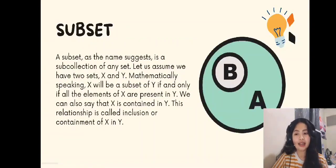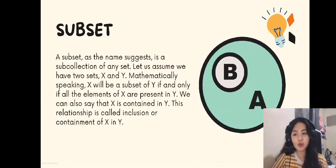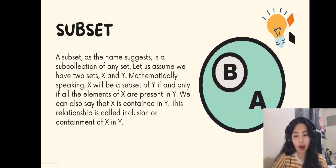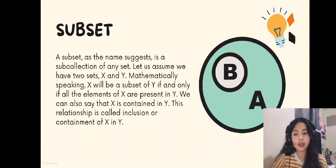A subset, as the name suggests, is a sub-collection of any set. Let us assume we have two sets, X and Y. Mathematically speaking, X will be a subset of Y if and only if all the elements of X are present in Y. We can also say that X is contained in Y. This relationship is called inclusion or containment of X in Y.